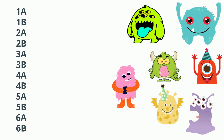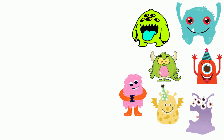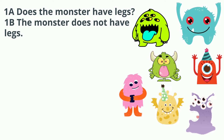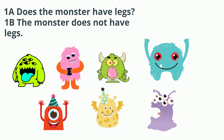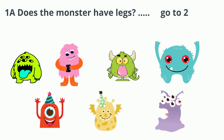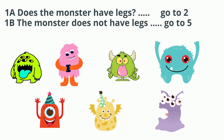Now let's divide the monsters into two main groups. I can do this with the question: does the monster have legs, or does the monster not have legs? When you divide the monsters this way, you have 4 monsters with legs and 3 monsters without legs. 1A will be: does the monster have legs? If yes, go to 2. 1B will be: the monster does not have legs, and they will go to 5, because I have 4 monsters with legs.